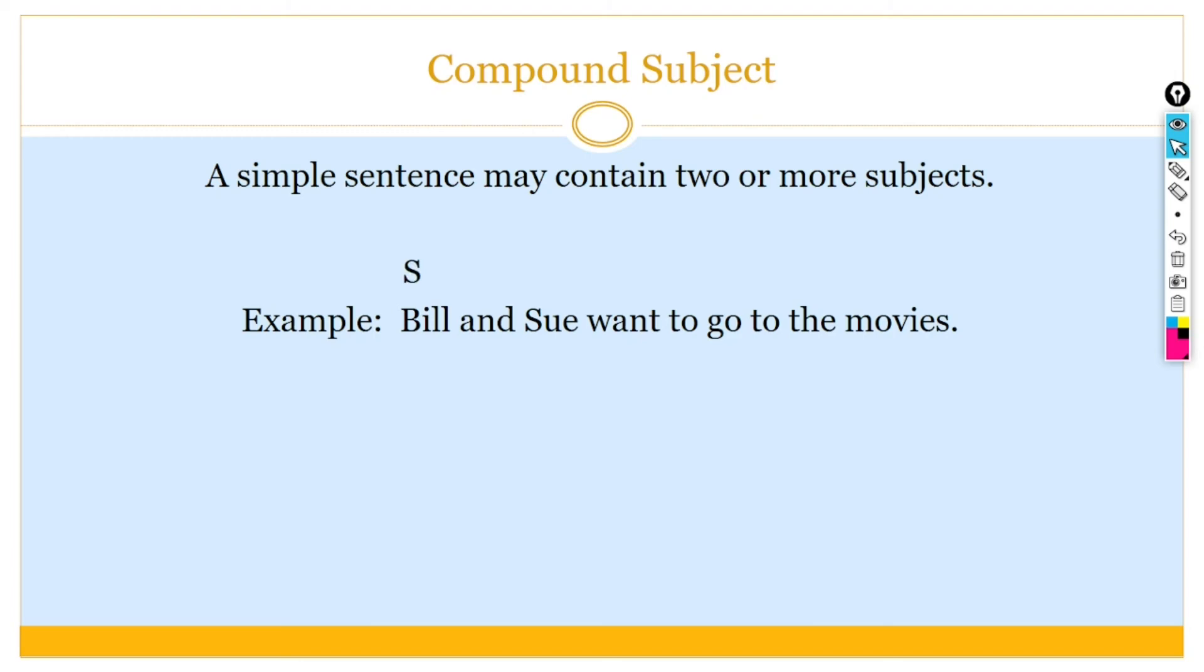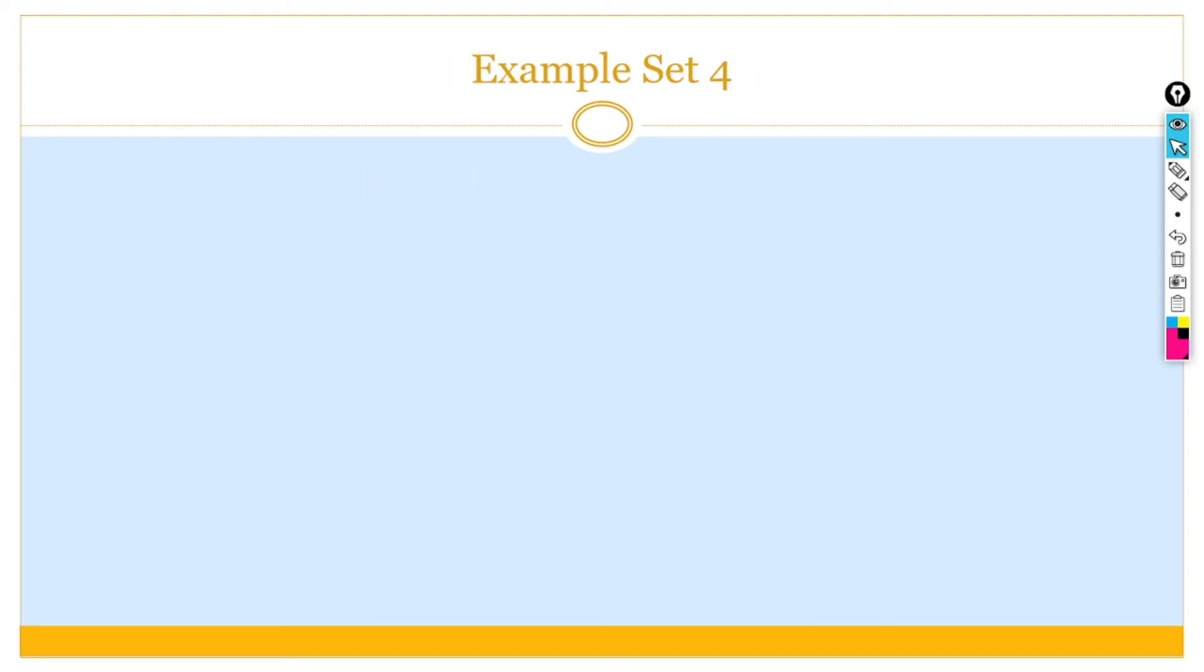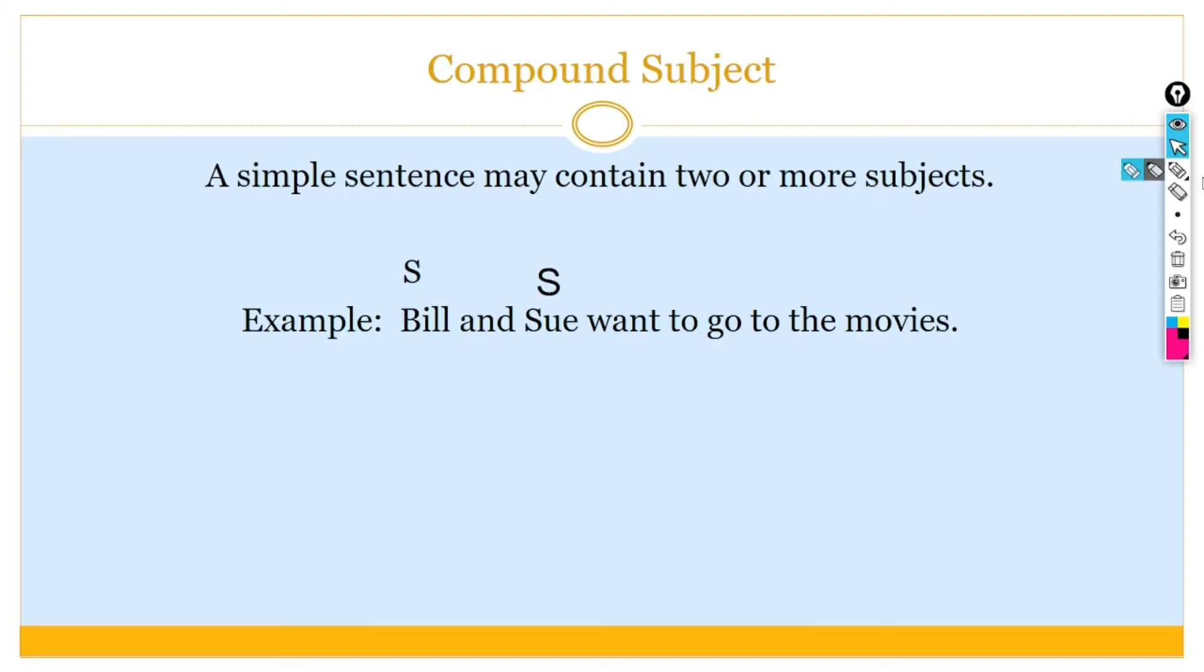Now, we will discuss the compound subject. A simple sentence contains two or more subjects like, Bill and Sue want to go to the movie. Here, in this example, Bill and Sue is a compound subject and want to go to the movie is predicate.